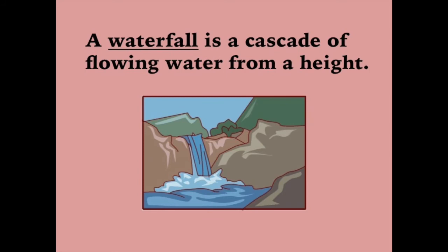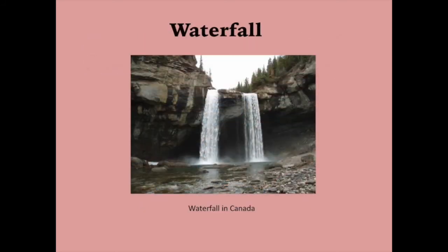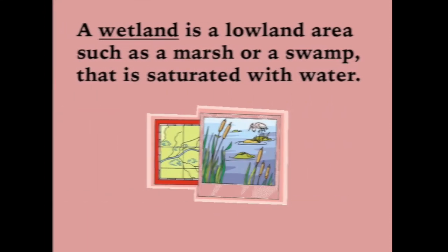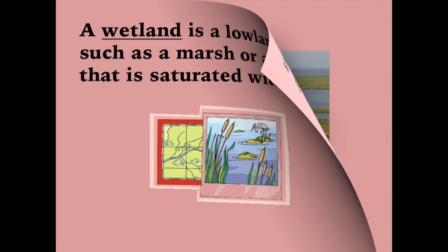A waterfall is a cascade of flowing water from a height. A wetland is a lowland area such as a marsh or a swamp that is saturated with water.